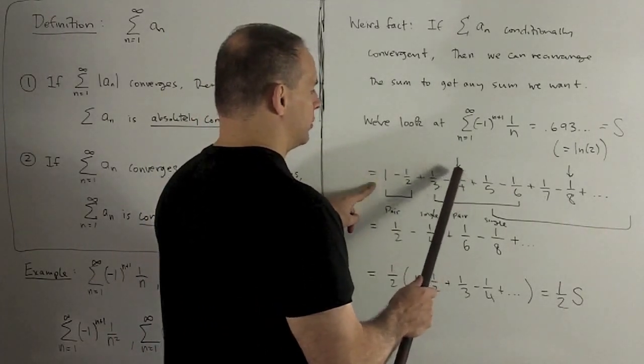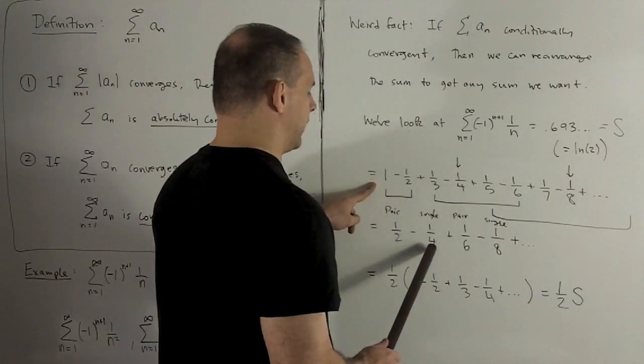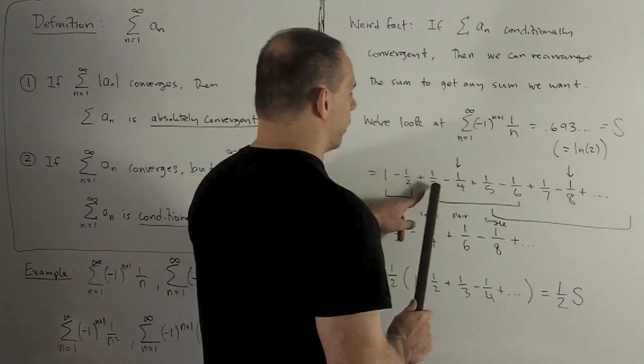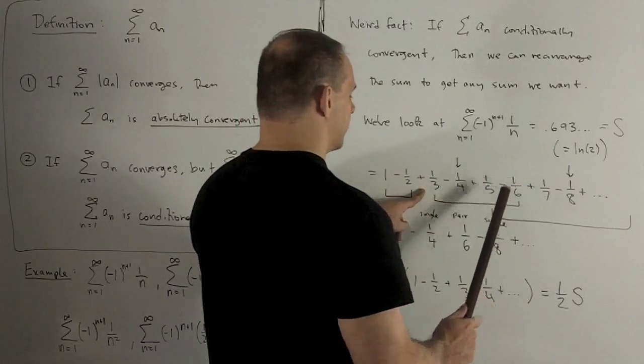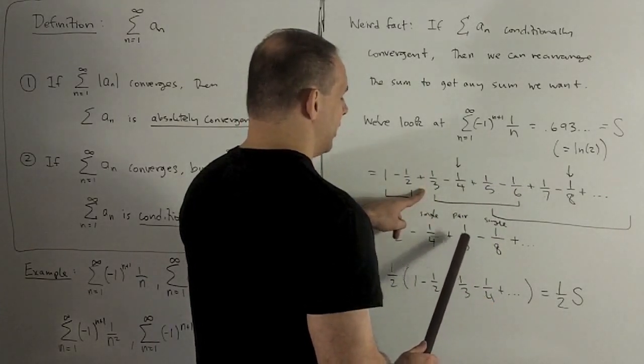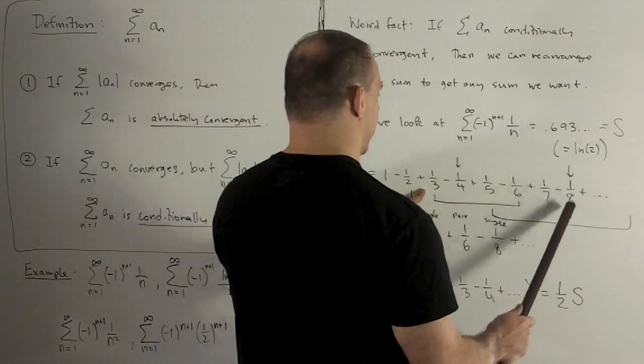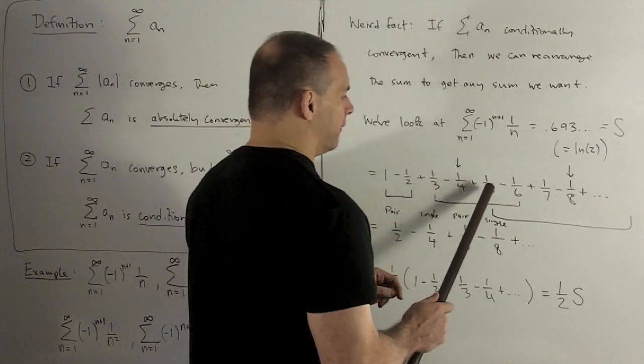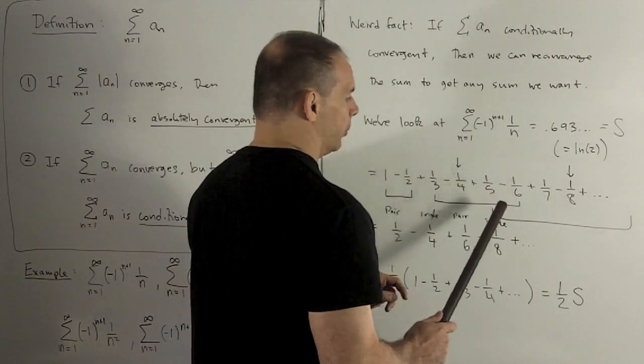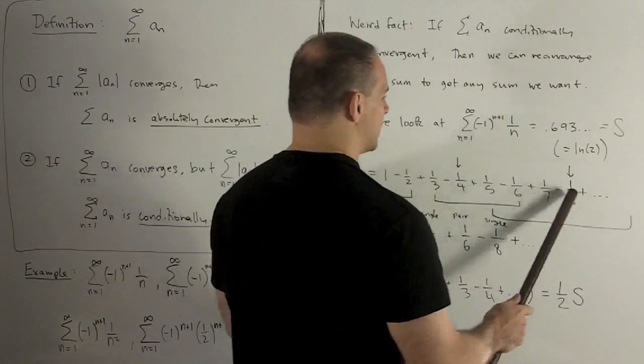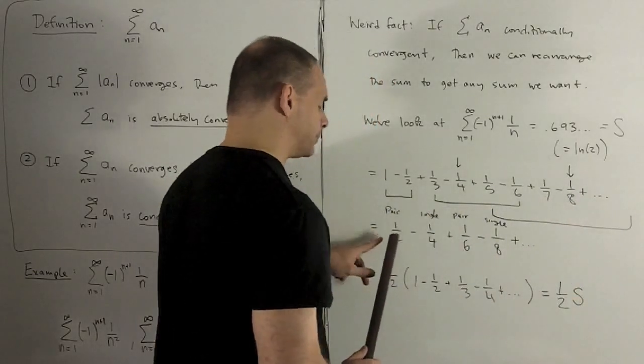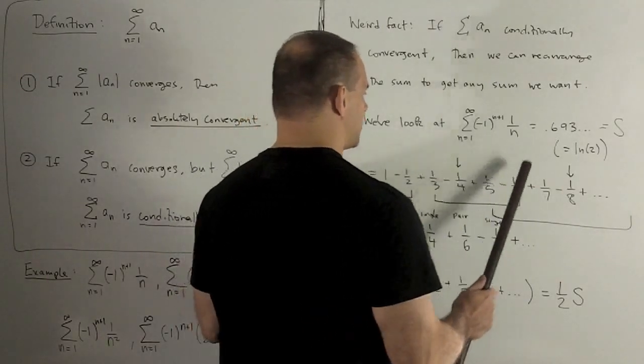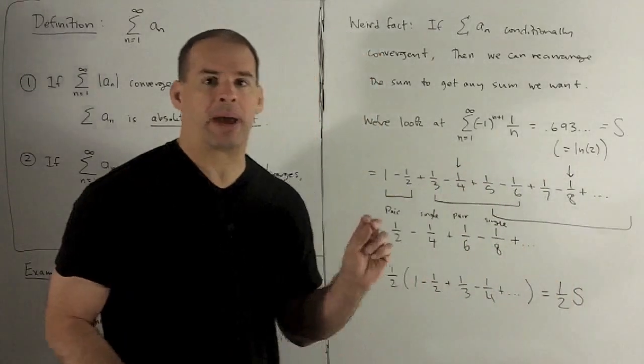So I'm going to start with 1 minus a half gives me a half. Then I'm going to jump to the minus a quarter, put that in with the minus sign. Then I'm going to want a one-sixth, so I can get that by a one-third minus a one-sixth gives me a one-sixth. Then I need a minus sign again, so I'm going to jump up to the minus one-eighth, bring that in. Then our next one would be one-fifth times two, which is going to be one-tenth, and we'll get that from one-fifth minus a tenth. And you notice, if you're keeping track of all the numbers we're using, it's going to exhaust everything in the list as we start moving out with that pattern.